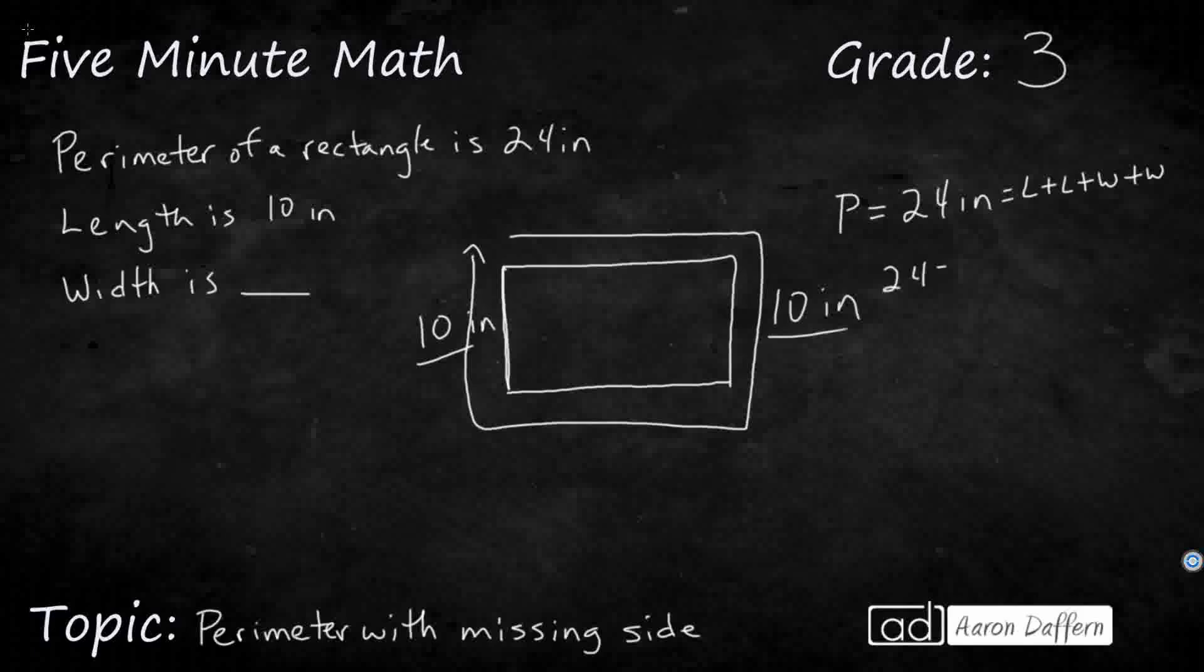We can say 24 equals 10, that's the first length, plus 10, that's the second length, plus I don't know what my two widths are. So, 24 equals, what's 10 and 10? 10 and 10 make 20, plus W plus W.